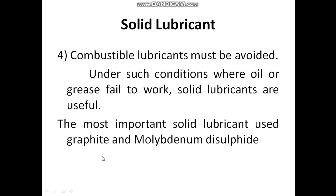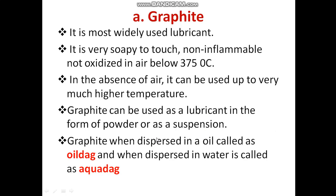In solid lubricants, we will look at two main types: graphite and molybdenum disulfide. Graphite is a widely used lubricant — it is soapy to touch, non-inflammable, and not oxidized in air below 375 degrees Celsius. In the absence of air, it can be used at much higher temperatures. Graphite can be used as a lubricant in the form of powder or as a suspension.